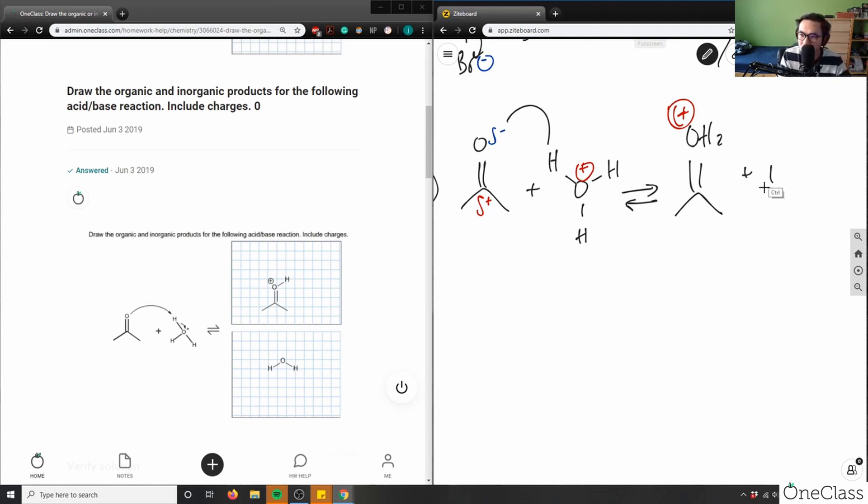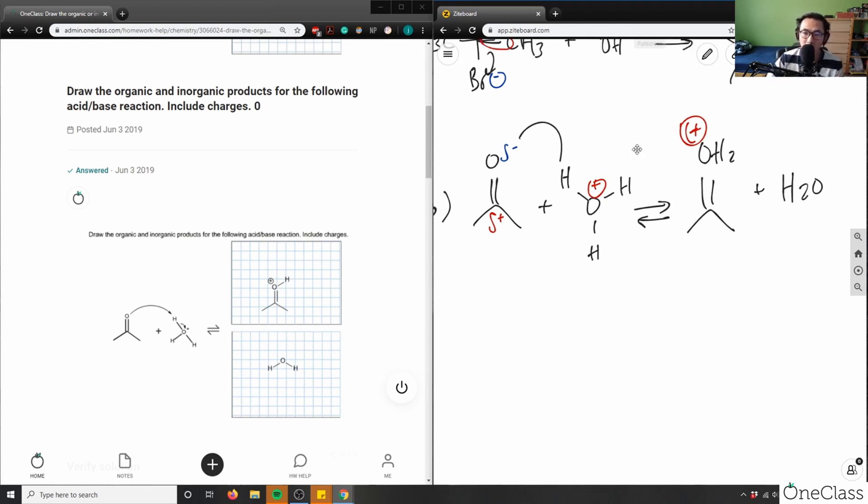So again, these questions here in organic chemistry, all you're doing is you're looking at where are the electrons constantly moving, right? So where's the negatively charged atom and where is it going? So in this case again, it's going to attack this hydrogen here. This hydrogen here is positively charged, so it's going to kick something out, right?